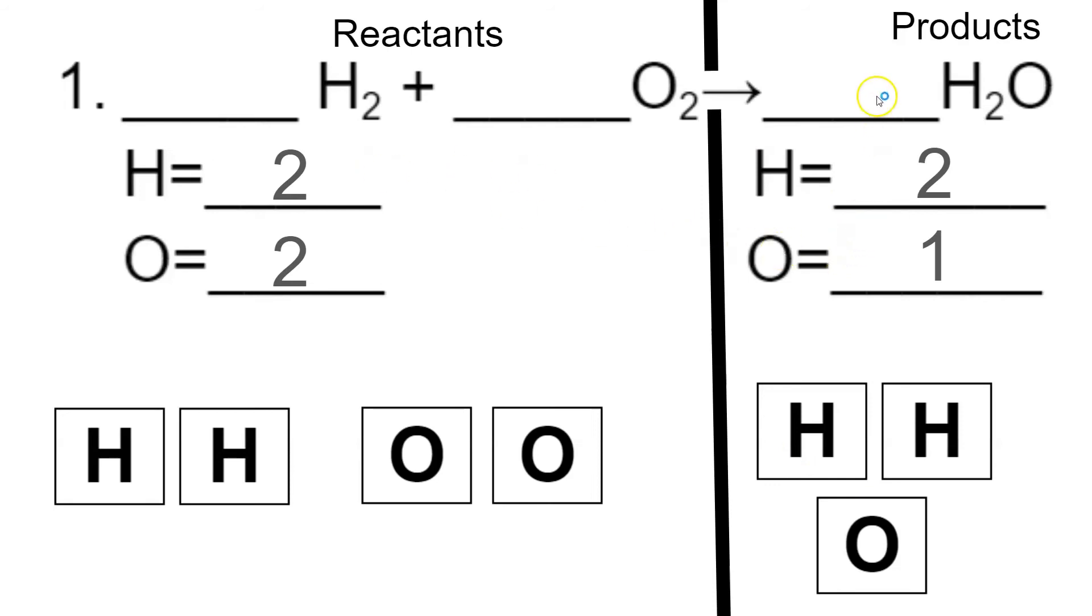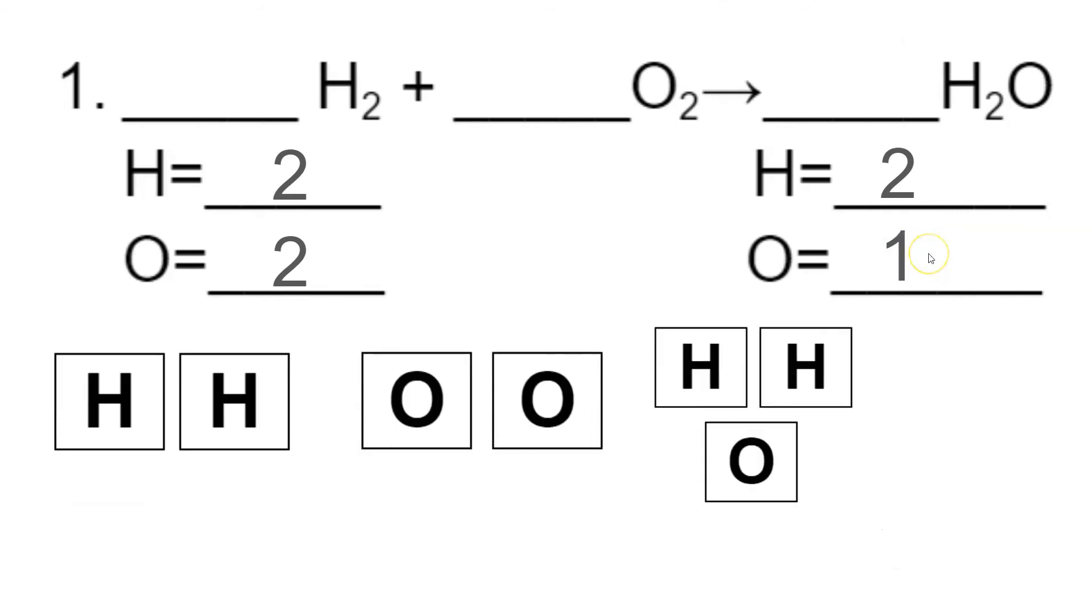So when we add a coefficient, we need to think about what number can I multiply to one to make it two? We're going to multiply by two. You see that? So I'm going to multiply by two. So that way, I can double the amount of oxygen. But did you notice what happened? We didn't just get another oxygen.